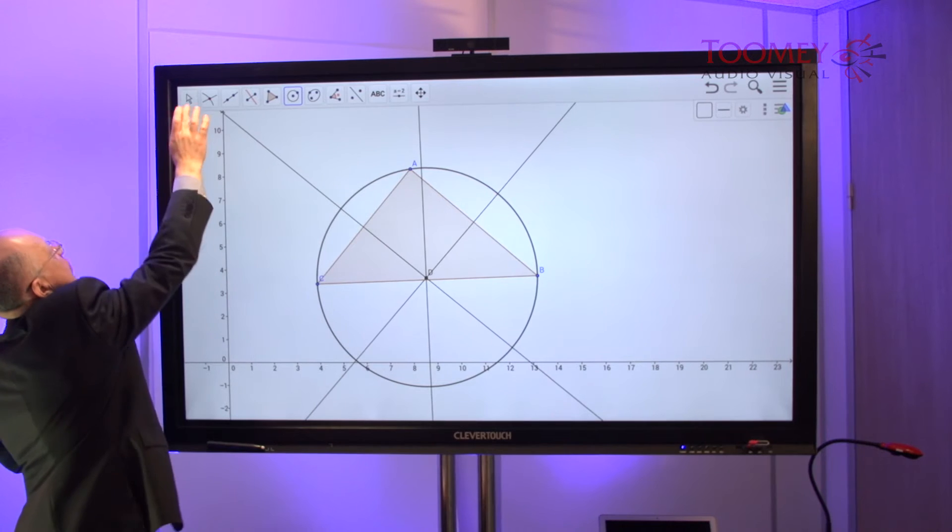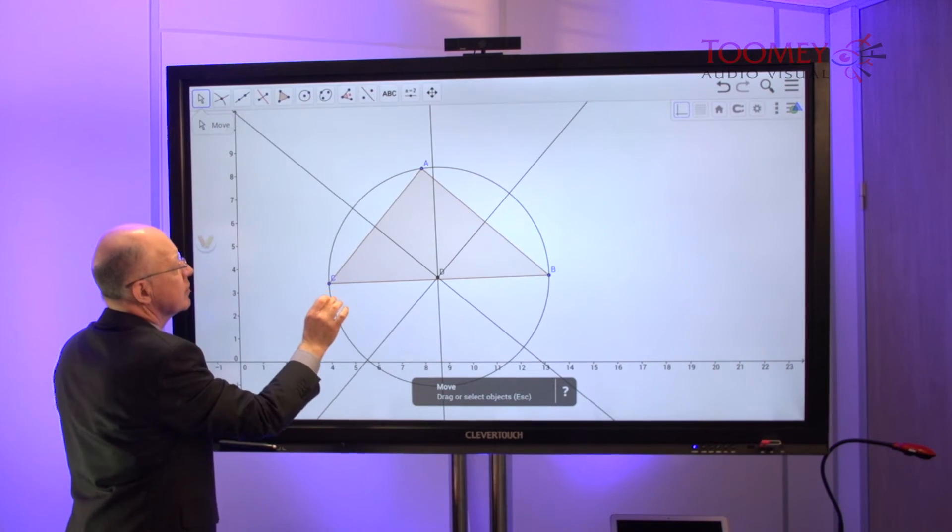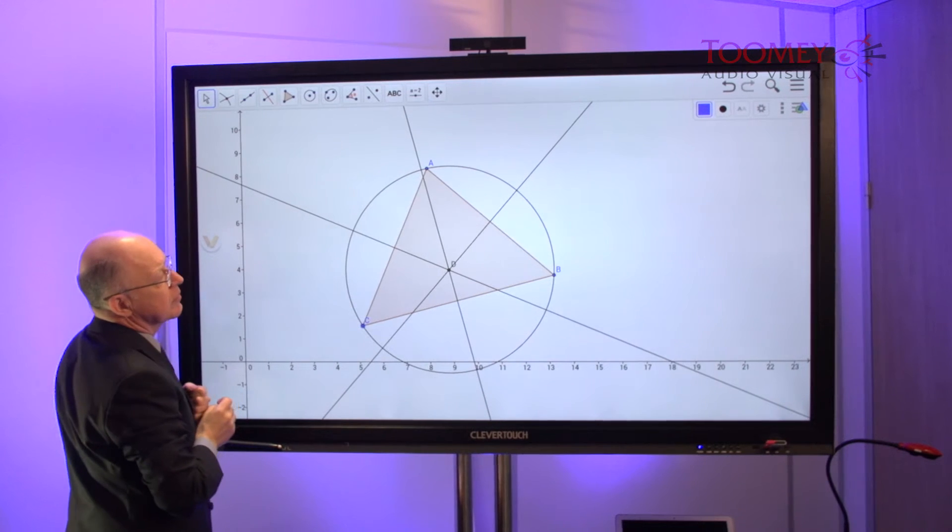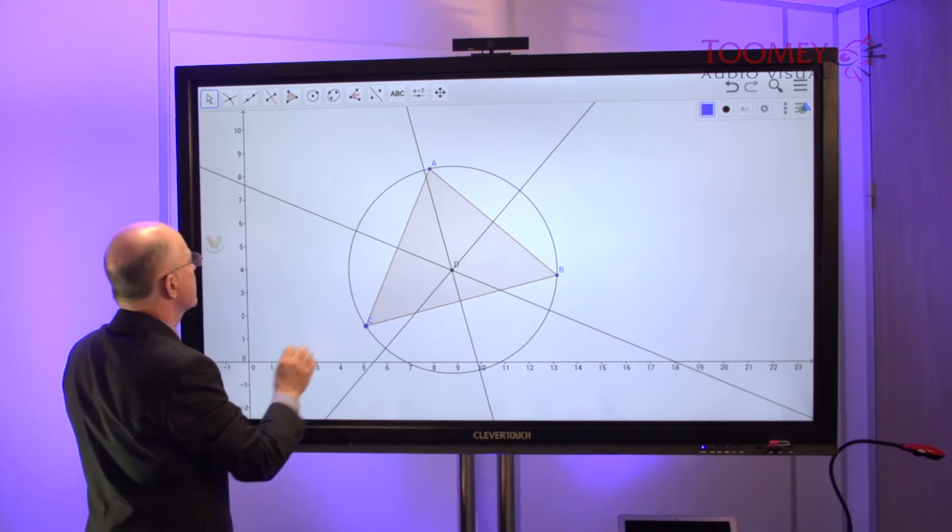Changing back into pointer mode, we can now manipulate and see where the center—the circumcenter of that circle—will be.